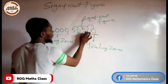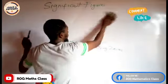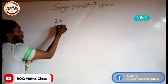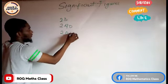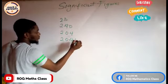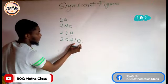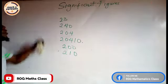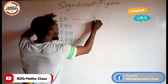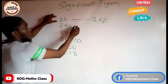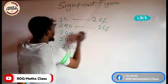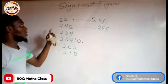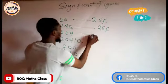One, two, three, four, five. Now let me start with some examples: 23, 240, 204, 241. For 23, how many significant figures? We have two significant figures. For 240, how many? Also two significant figures, because the trailing zero has no decimal point, so we don't count it.